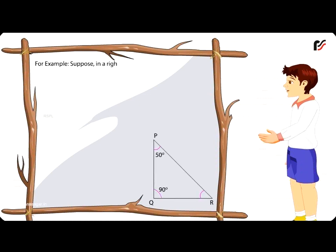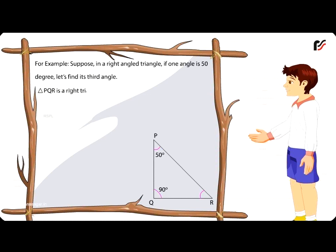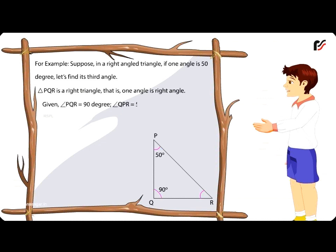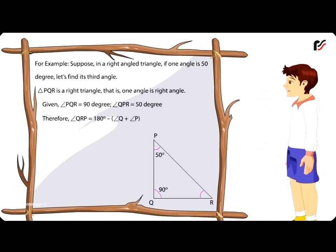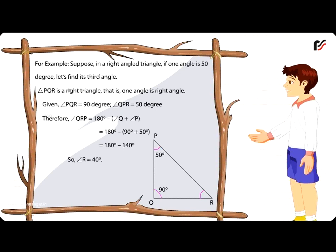For example, in a right angled triangle, if one angle is 50 degrees, let's find its third angle. Triangle PQR is a right triangle, i.e. one angle is a right angle. Given angle PQR = 90 degrees, angle QPR = 50 degrees. Therefore, angle QRP = 180° − (angle Q + angle P) = 180° − (90° + 50°) = 180° − 140°. So angle R = 40 degrees.